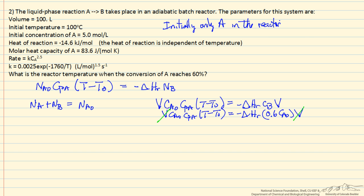So the volume cancels, the concentration cancels, and we end up with an equation that T minus T0 is just minus the heat of reaction times 0.6 over the heat capacity of A.